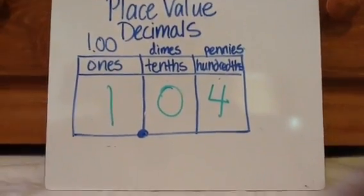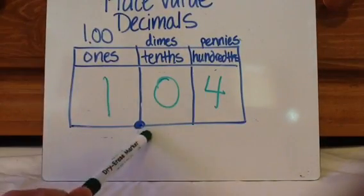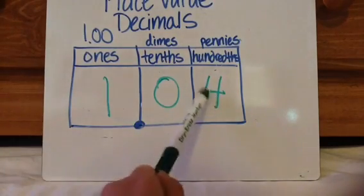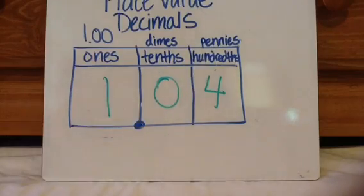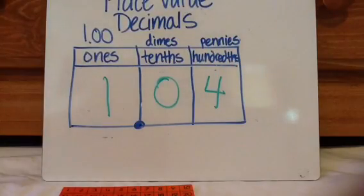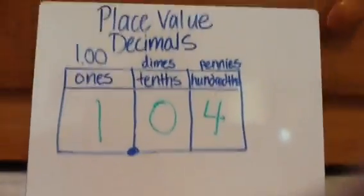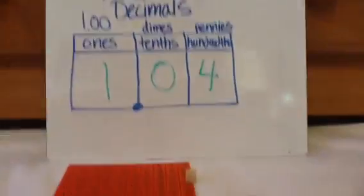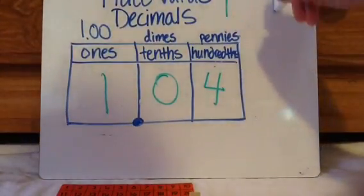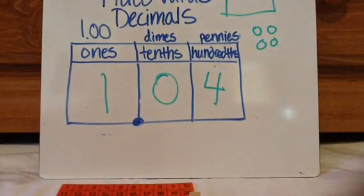Let's look at another example. The way you would read it is 1 and 4 hundredths — not 1 and 4 tenths, because that 4 is in the hundredths place, so 1 and 4 hundredths. So to represent it, this is my ones block according to decimals. I have 0 tenths, so I'm not going to use any of those, and then 4 hundredths. As far as money is concerned, it's a dollar bill and 4 pennies — 1 dollar and 4 cents.